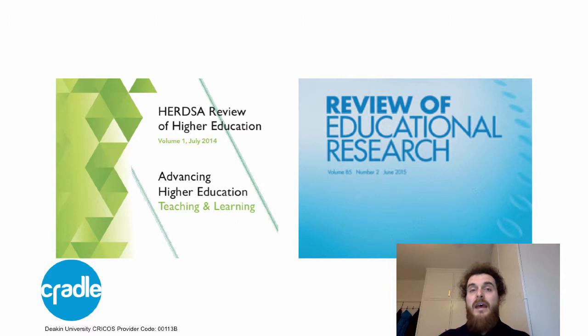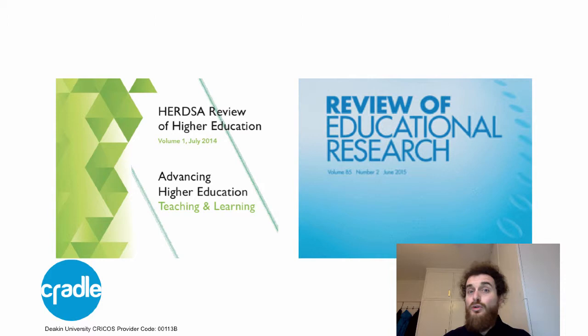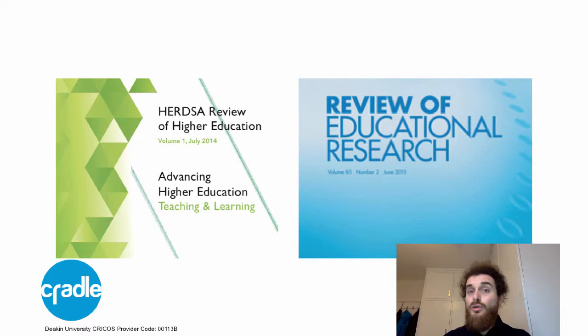Here are two good sources of review studies. The HERD Review of Higher Education is put out by the Higher Education Research and Development Society of Australasia. It's a free, open-access, practitioner-targeted journal. HERDS hopes that everyday academics are reading this to get a grasp of fundamental learning and teaching things in a rigorous way, and also that the big bosses are reading this too. On the more educational research end, you've got Review of Educational Research, which is not higher ed specific, but does publish a lot of studies about higher ed. These are where I go when I want to find out about a new field.